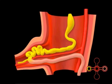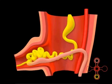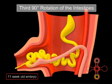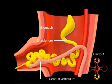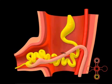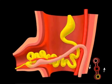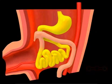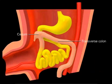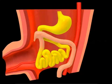The caudal limb of the loop will develop into the distal half of the ileum, the cecum, the ascending colon, and the proximal two-thirds of the transverse colon. By the sixth week, the continuing elongation of the midgut forces the primary intestinal loop to protrude into the umbilicus — physiological herniation. Concurrently, the loop rotates 90 degrees counterclockwise around the axis of the superior mesenteric artery.